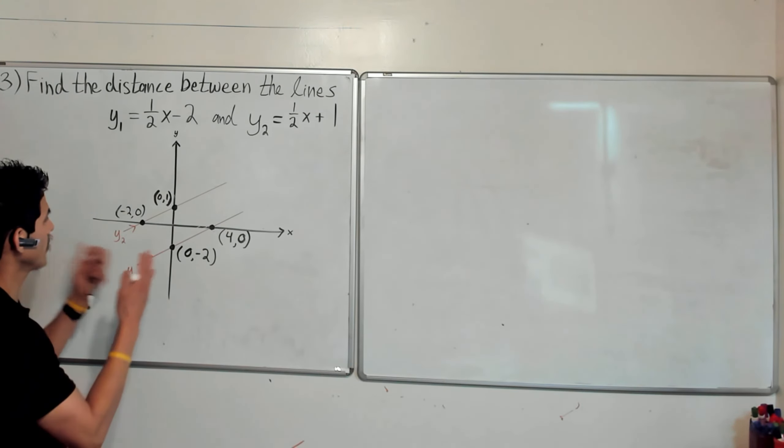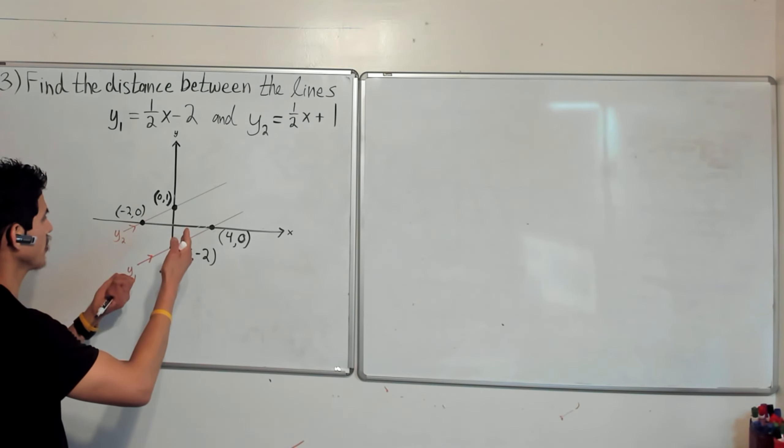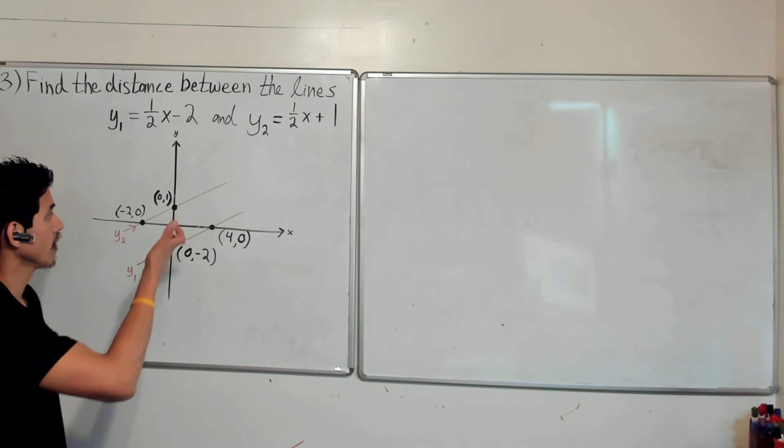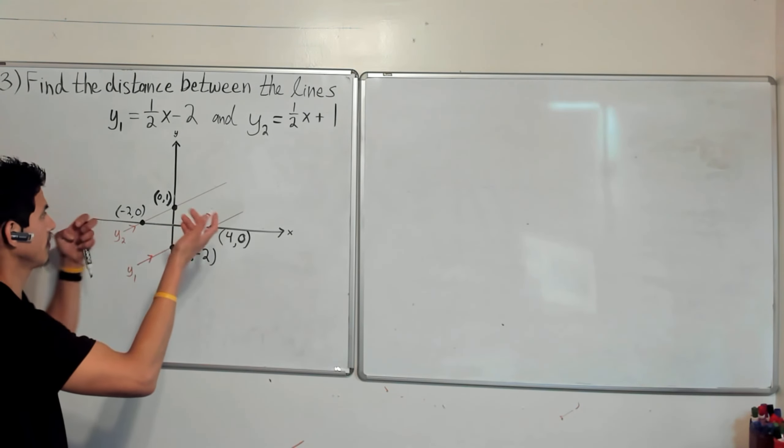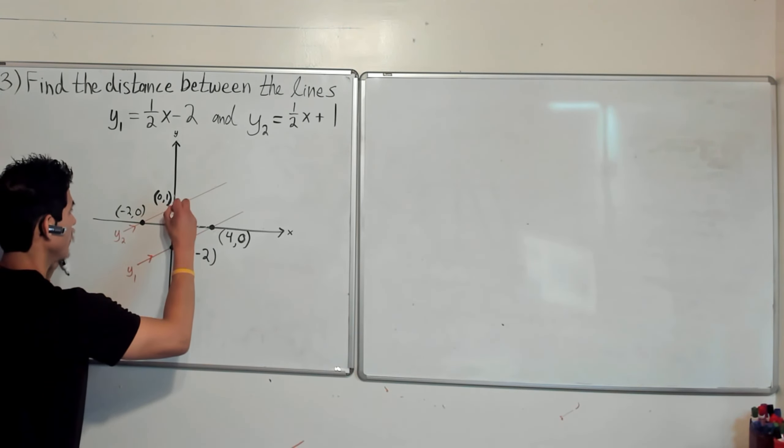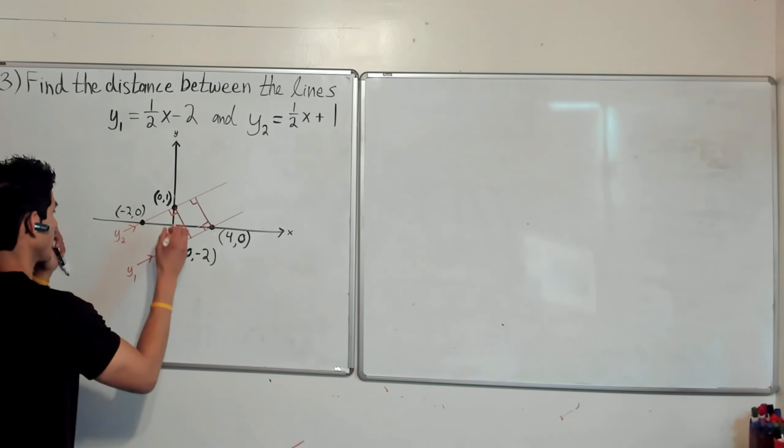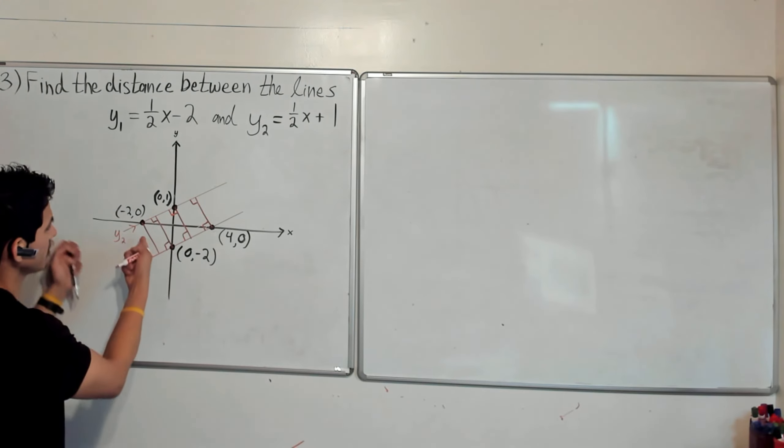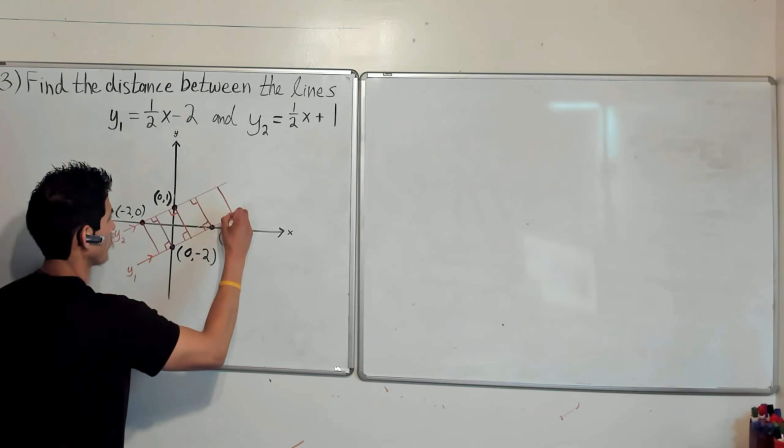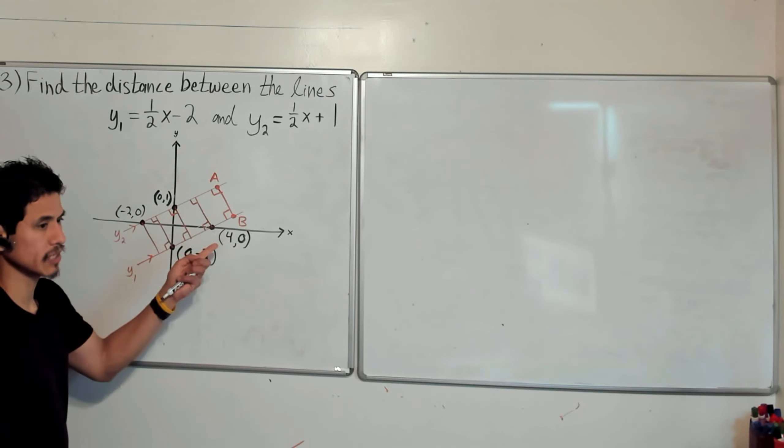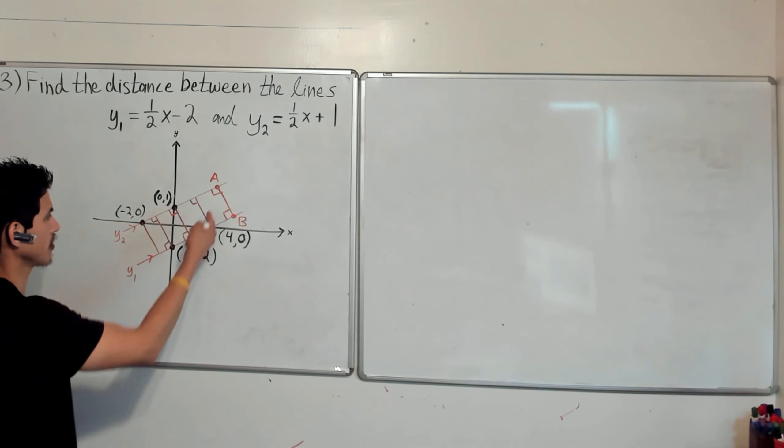Okay. So the idea here is to figure out how far these lines are from each other, but there's more than one line segment that you can study. In fact, you can figure out an infinite amount, as long as they're perpendicular to both lines. I can find the length of this segment or the length of this segment or this segment. It doesn't even have to go through any of the intercepts. I could have another perpendicular segment. Let's say A, B. As long as these segments are perpendicular to both y1 and y2, that's all that matters because all these are going to be congruent.